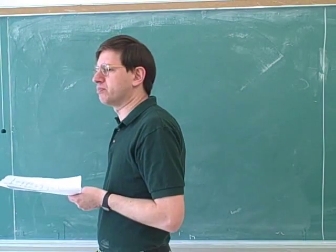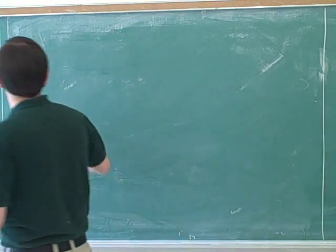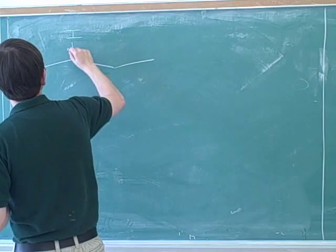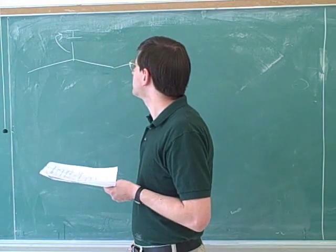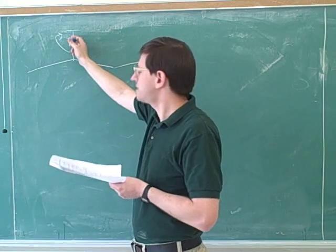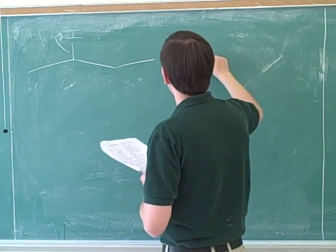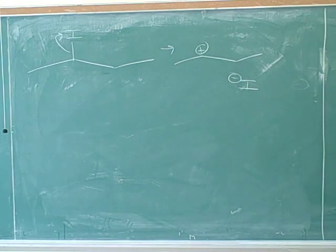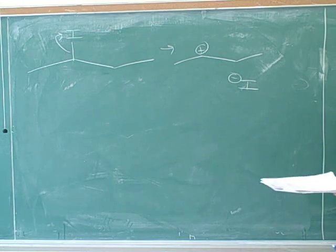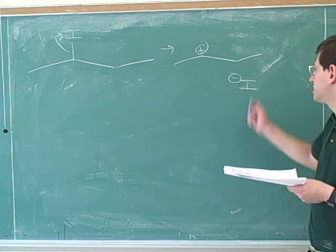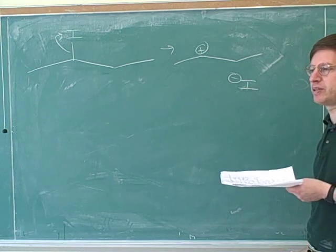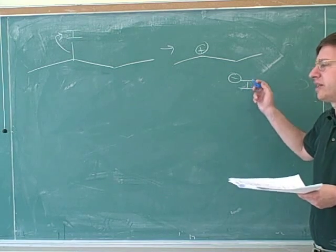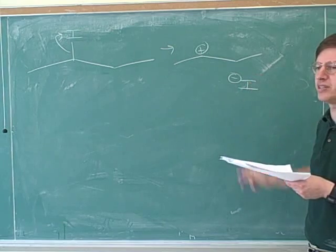What makes something a good leaving group? What do leaving groups do? A leaving group is somebody who leaves and takes its electrons with it. The key thing about leaving groups is they don't just leave — they take their electrons with them. So a good leaving group has to be somebody who can stabilize those electrons. Iodine can stabilize the electrons because it's electronegative and it's big, which helps it to stabilize the electrons.